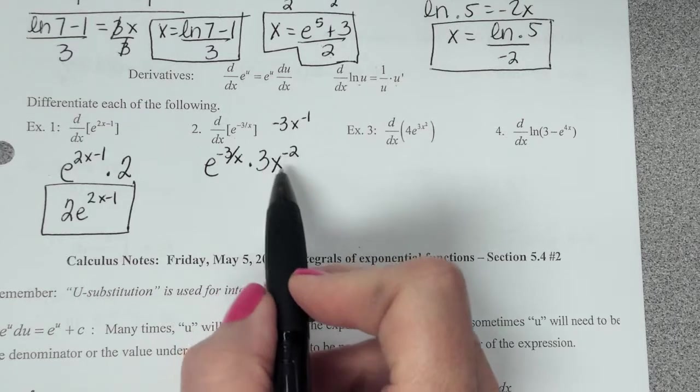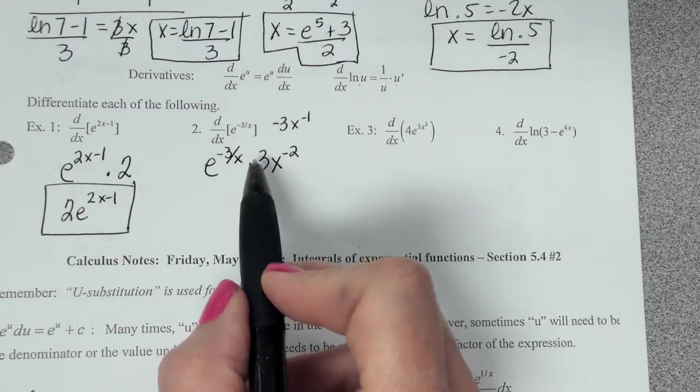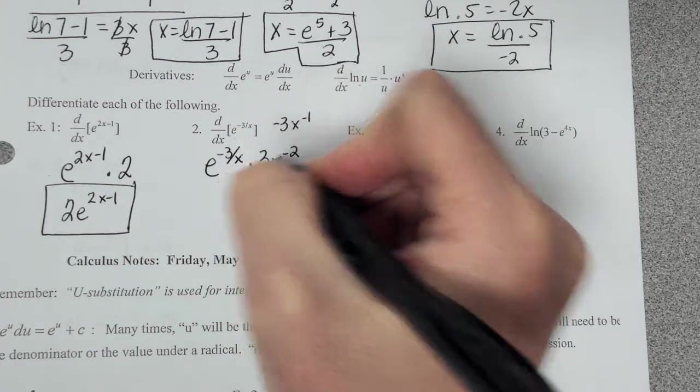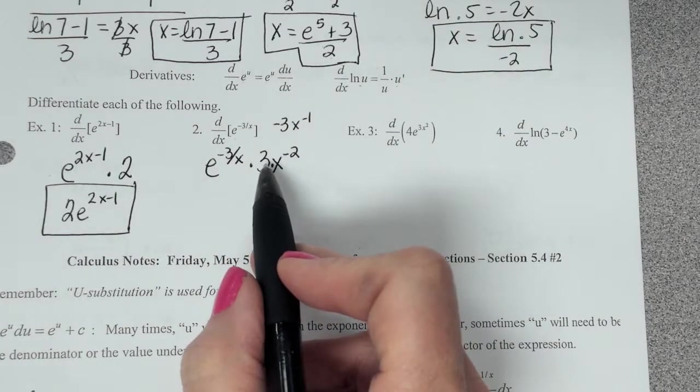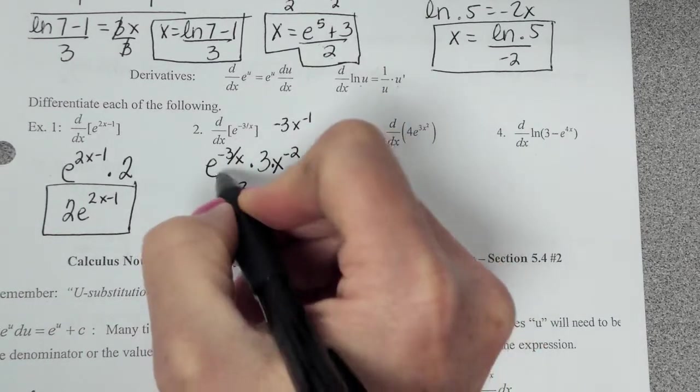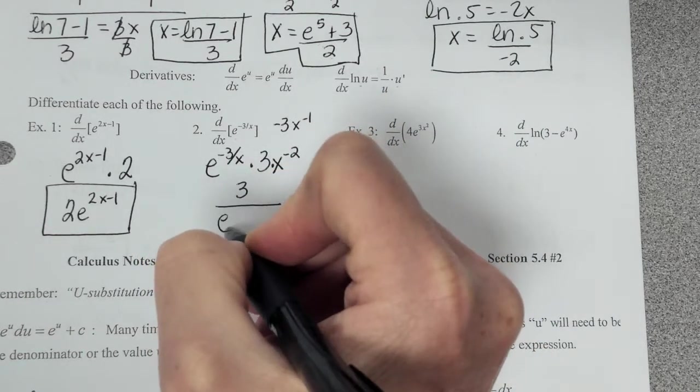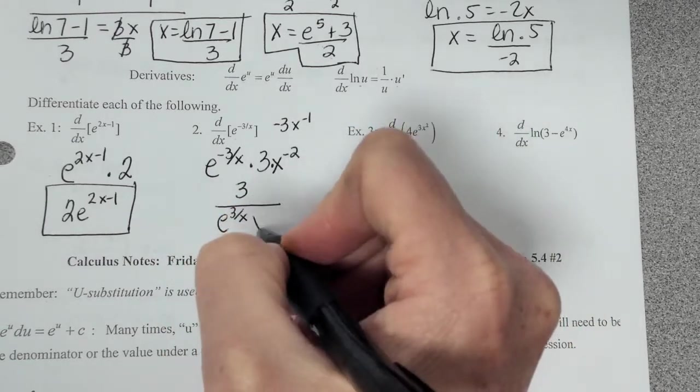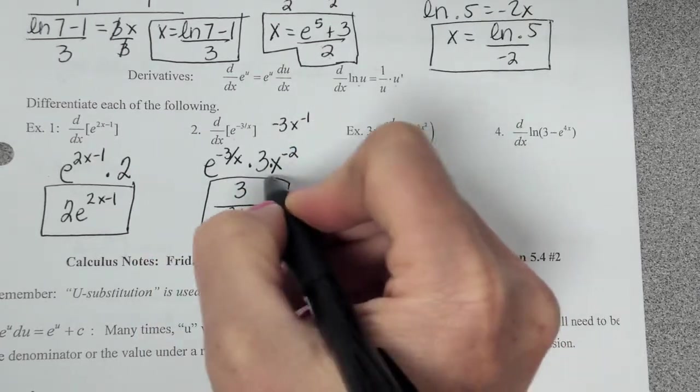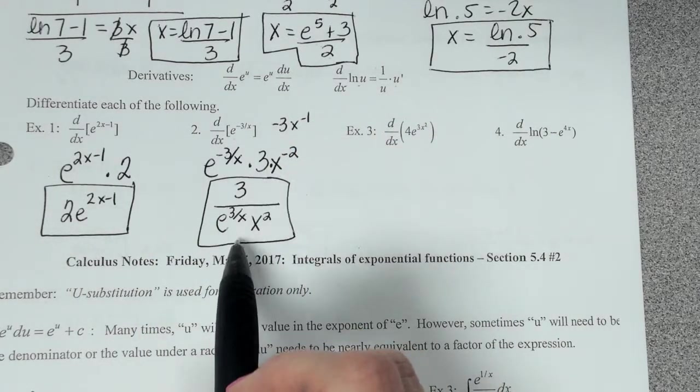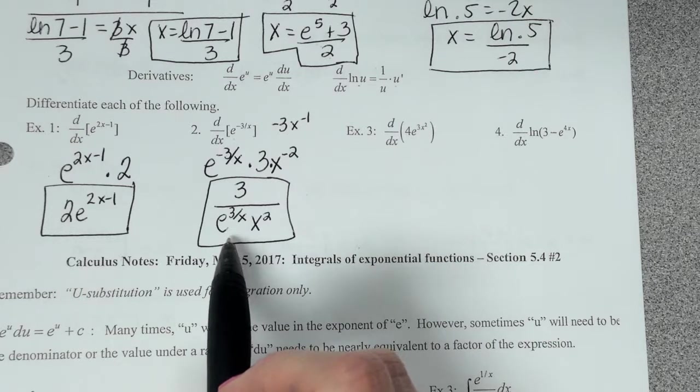Now watch how I finish this answer. Every value that is to the negative power goes to the denominator. This 3, though, it's a factor in and of itself, and it's not raised to a negative power. So the 3 is going to stay where it is. This is to a negative exponent. It goes to the bottom. This is to a negative exponent. It goes to the denominator. But the 3 just stays in the numerator because it does not have a negative exponent.